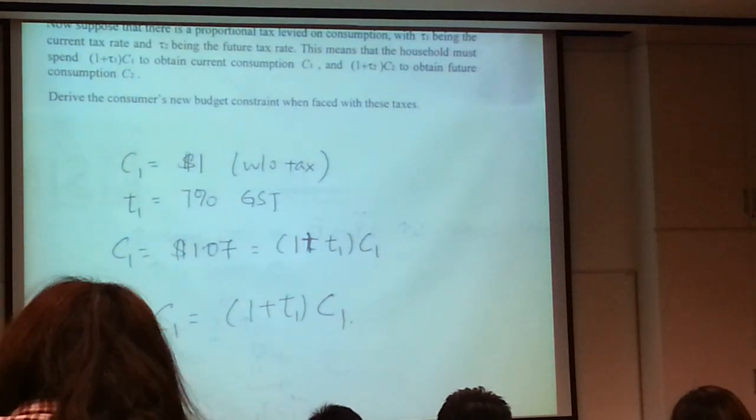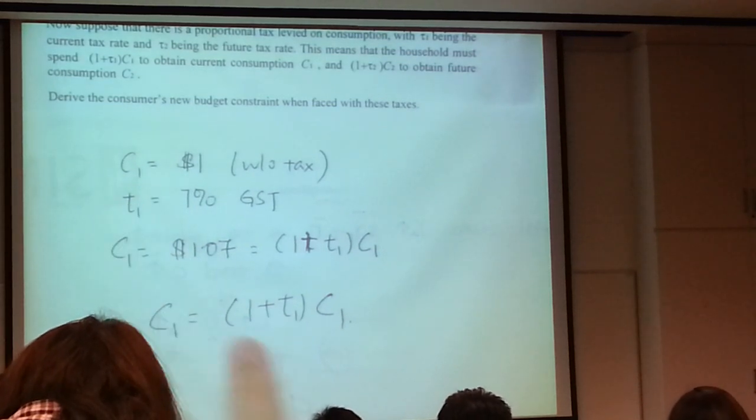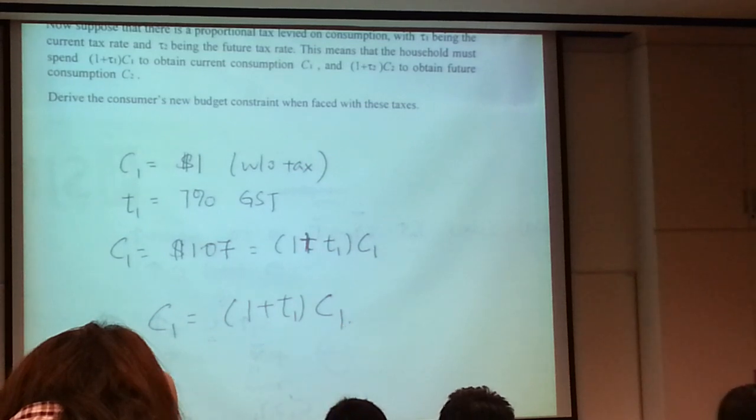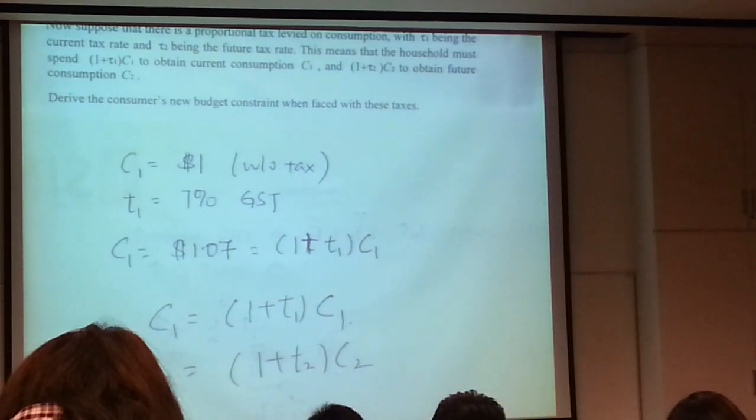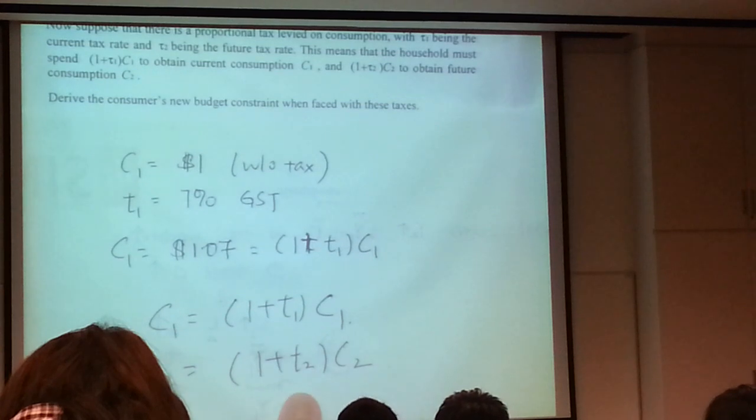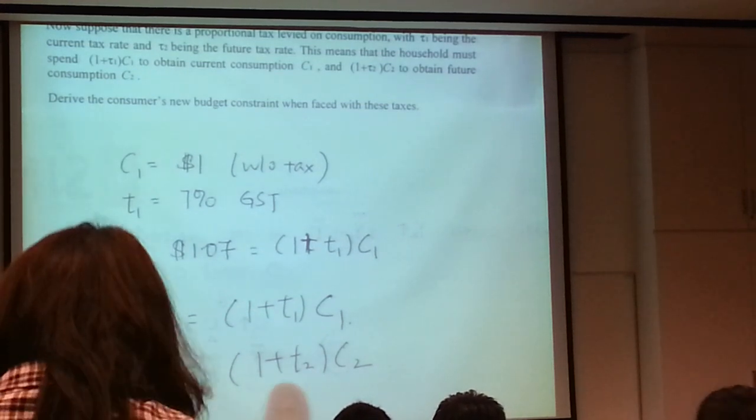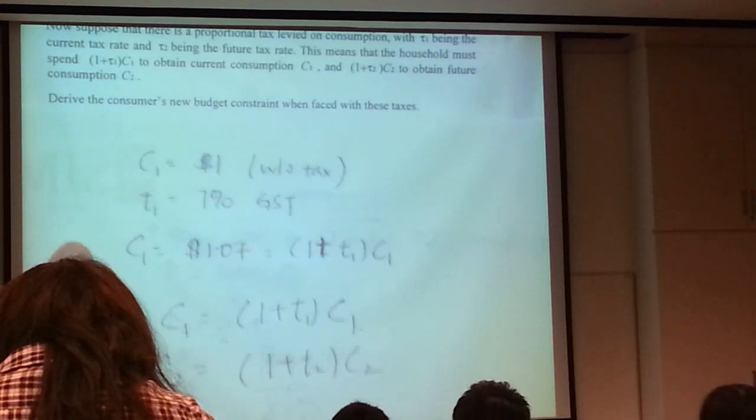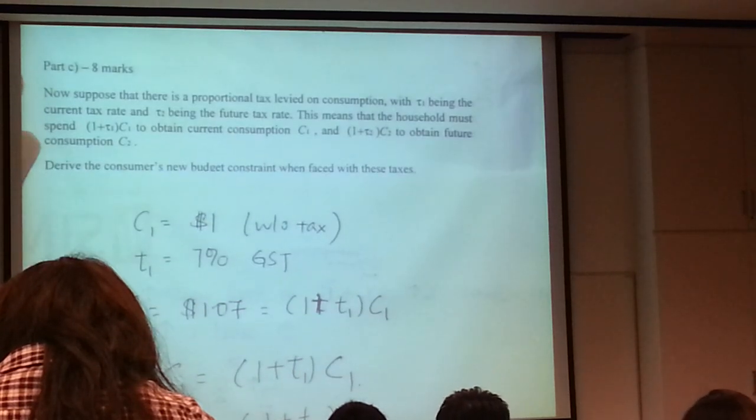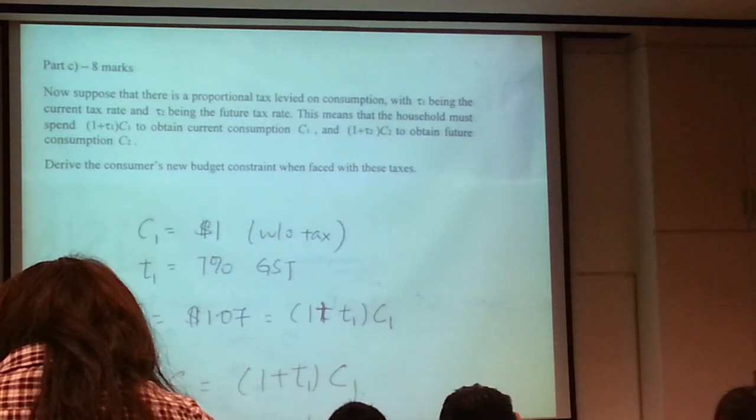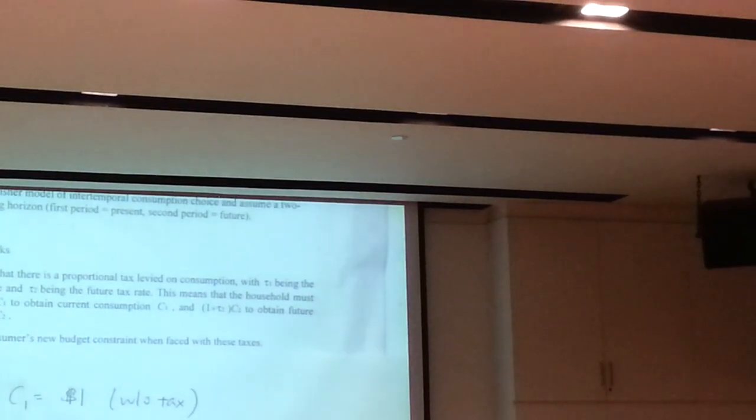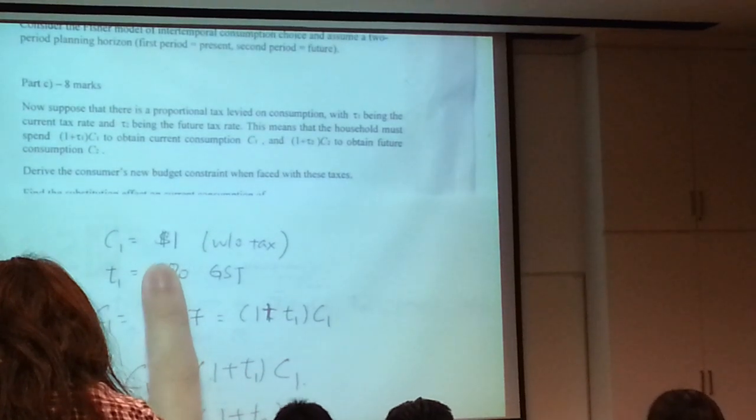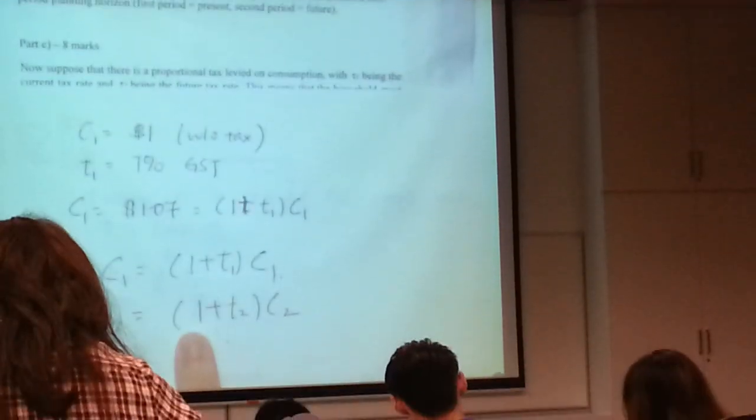So how much do you pay for C1? You must pay $1.07, right? This is what we do, which is actually equals to 1 plus T1 times C1. That's why we write C1 as 1 plus T1, C1. This is what proportional tax is about. You add to your consumption. So C1 now became 1 plus T1, C1. So the same goes for C2. It became 1 plus T2, C2.